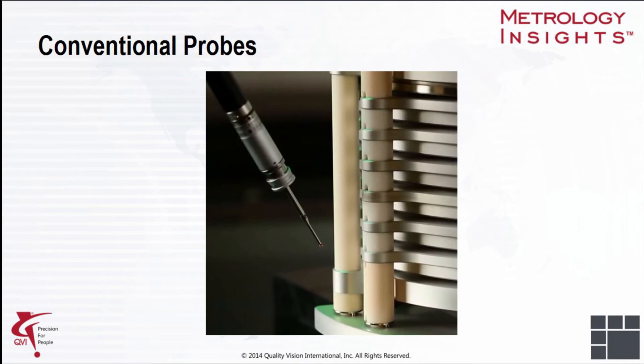A typical touch trigger probe stylus ranges in size from five millimeters to as little as one millimeter. In some special cases, a stylus can be as small as 0.3 millimeters. Probing forces are typically on the order of 6 grams in X and Y and 66 grams in Z.